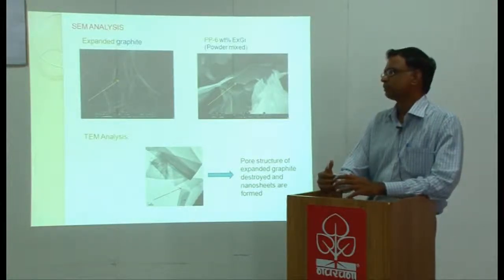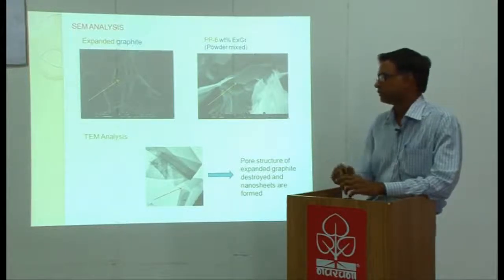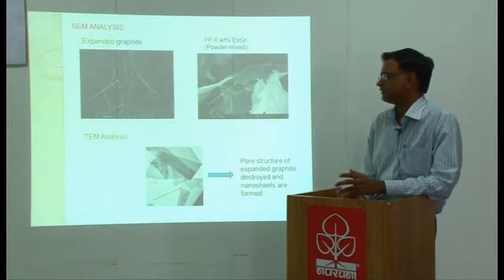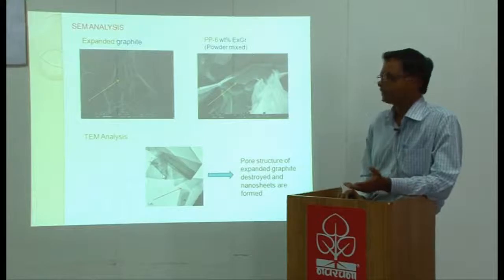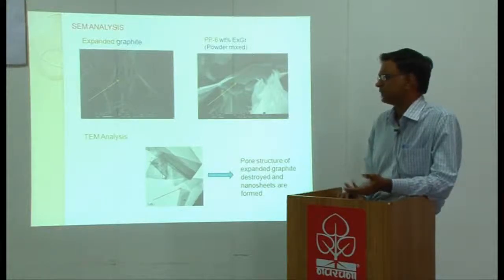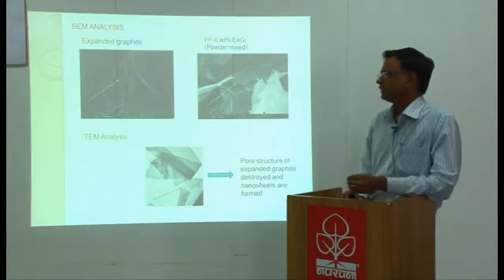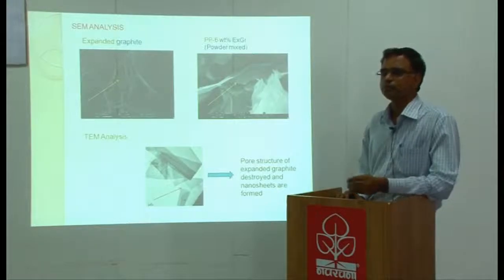One can carefully make, suppose if you go for making nanosheets, just you go and buy it. This is very simple process of making graphite nanosheets. There are other ways of making graphite nanosheets as well, but one can choose a proper method whereby cost of material development can be reduced.